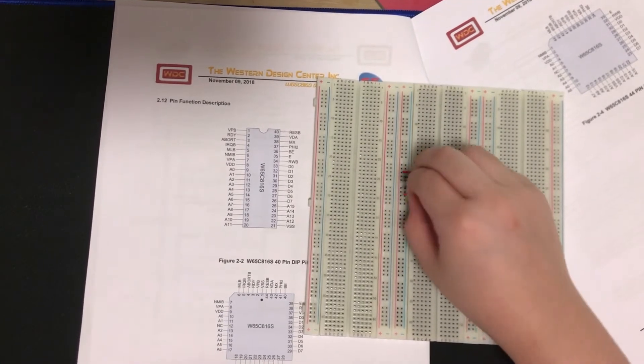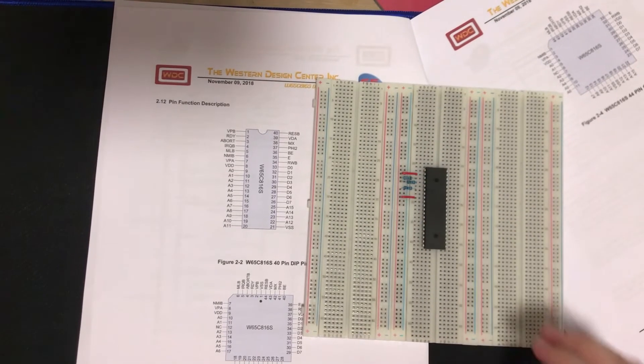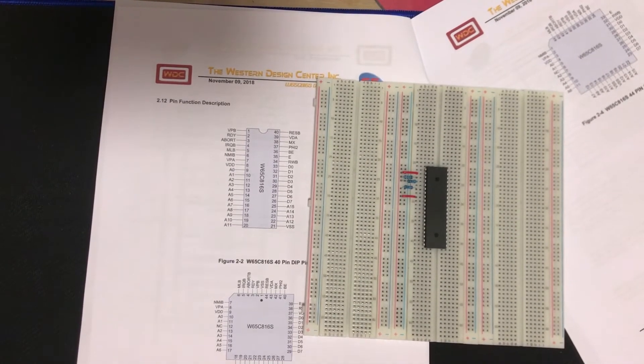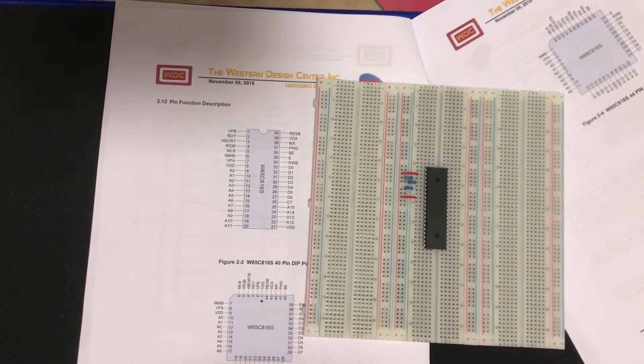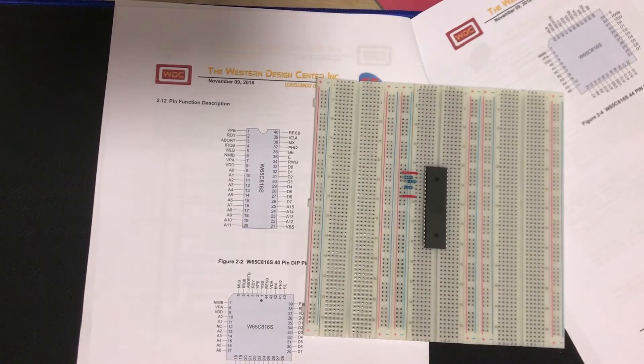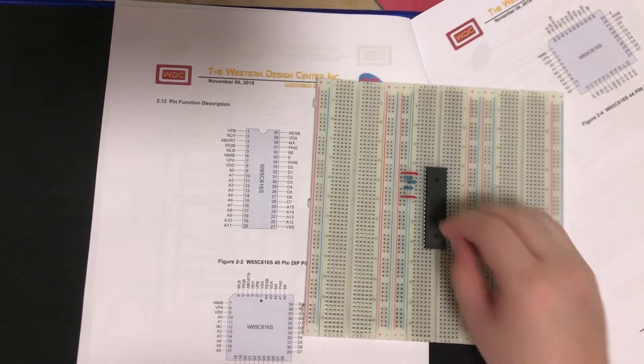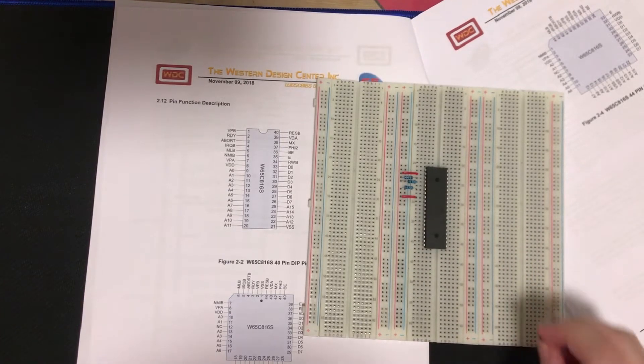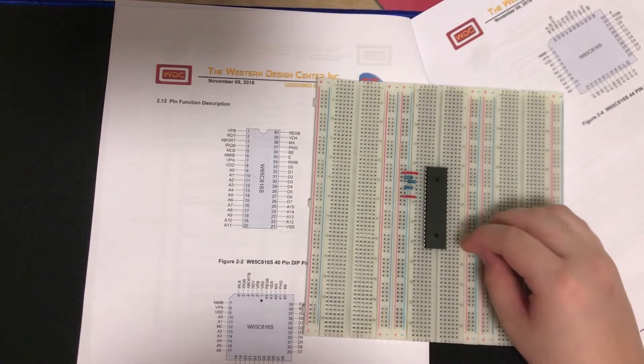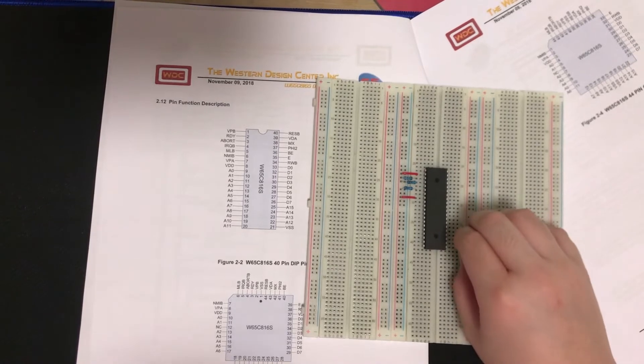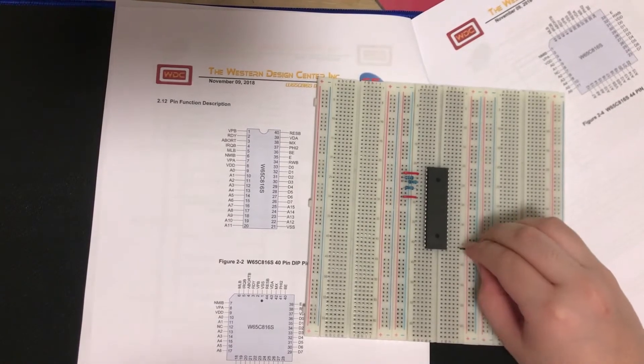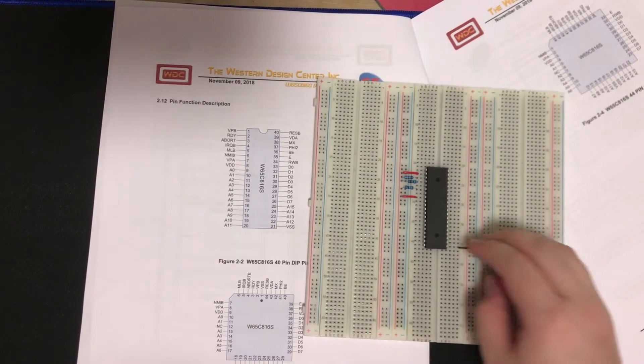For our next 12 pins, we have the first 12 address lines. These are used to signal to other peripherals what address the microprocessor is addressing. These are all output pins. Pin 21 is VSS. This is the negative power supply in, or zero volts. So we're just going to tie that to the ground.